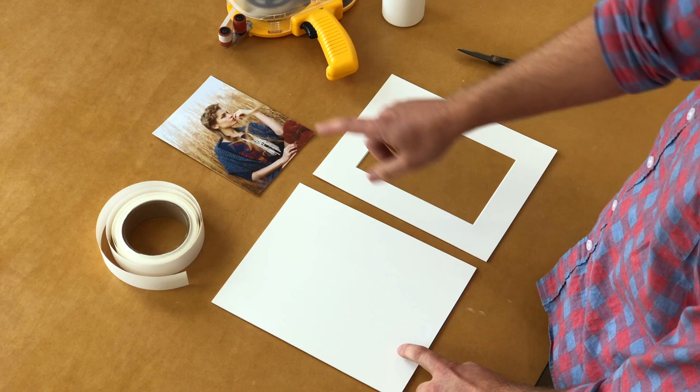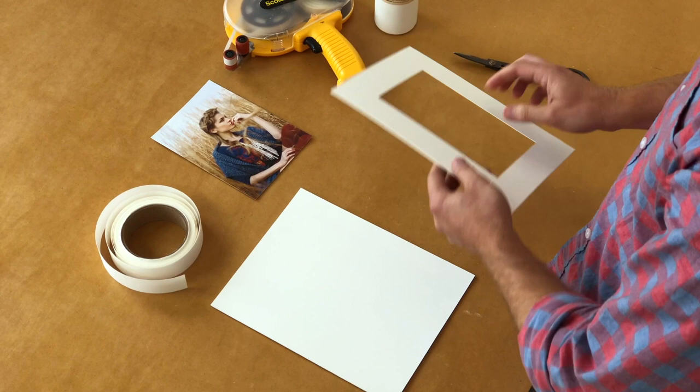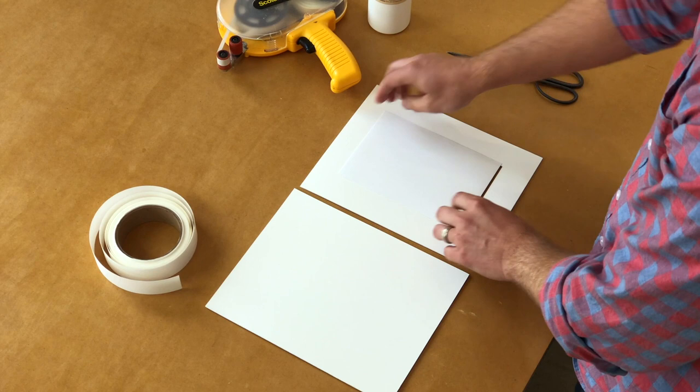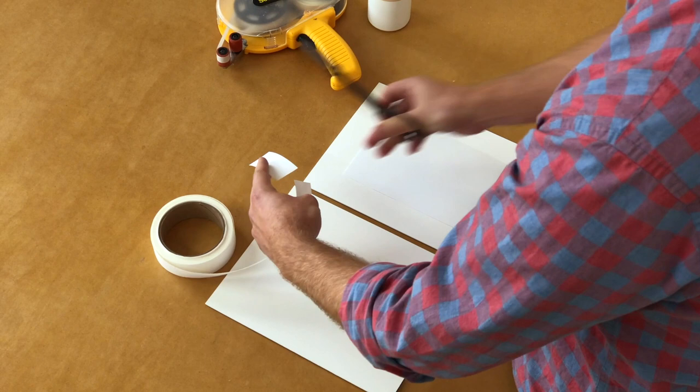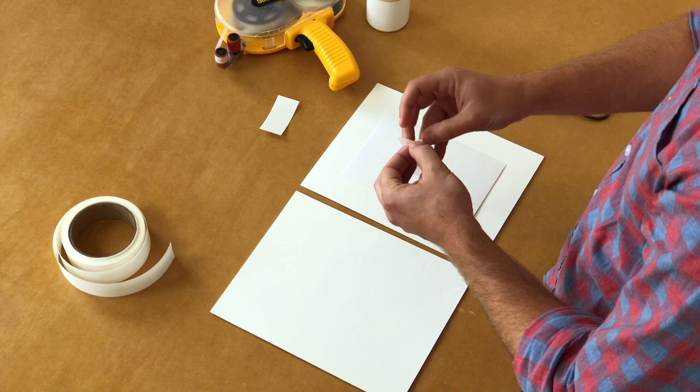So the first thing you do is you flip the front mat over, you take your print, flip it over, and make sure that there's no gaps or anything like this. You will make sure that it covers the hole evenly. Then you will cut a couple pieces of tape. This is for doing a 5x7 print and an 8x10 mat. You'll separate the front of the tape from the backing.